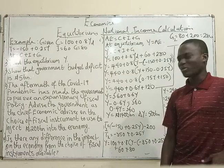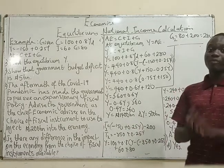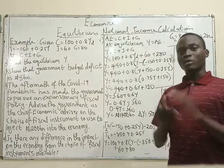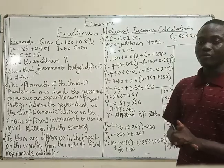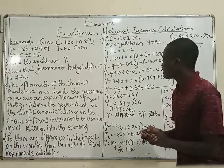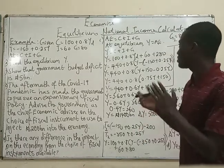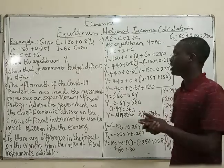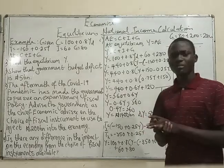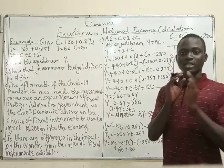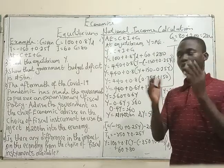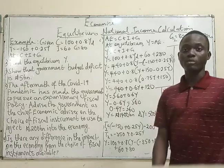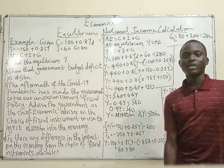I hope you've learned something from this video. If you have any questions, leave them in the comment section, subscribe, and share with your friends and turn on notifications. I'll be talking about other things still related to equilibrium national income in subsequent videos — including autonomous expenditure and how it changes equilibrium income — and from there we'll be moving to the IS-LM model. Thank you very much for watching, and see you next time.